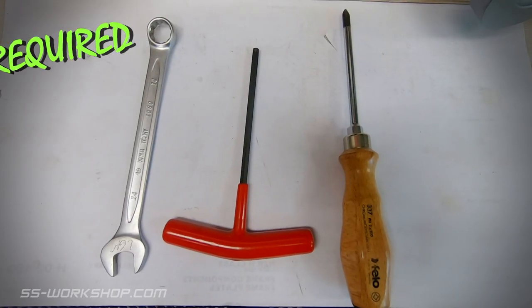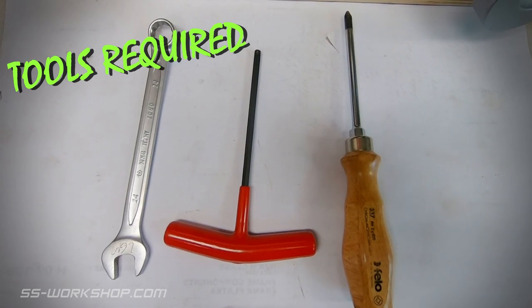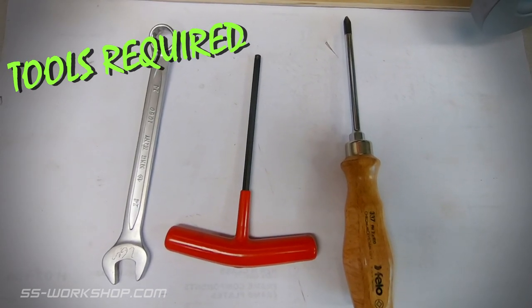The tools you require for this are a phillips screwdriver and an allen key. I've also grabbed a spanner as I'm going to fit my collet chuck.